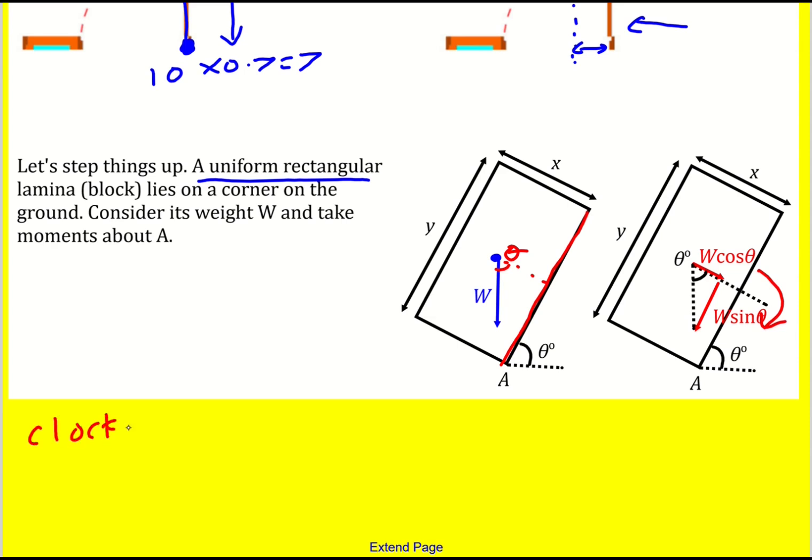This will create a clockwise moment. So clockwise moment, that would be W cos theta, the force, and then times by the distance, which in this case is actually going to be Y over 2, because the whole thing is Y, it's acting in the middle, so it's just going to be Y over 2. And that feels like it's just kind of building on what you do with rods.